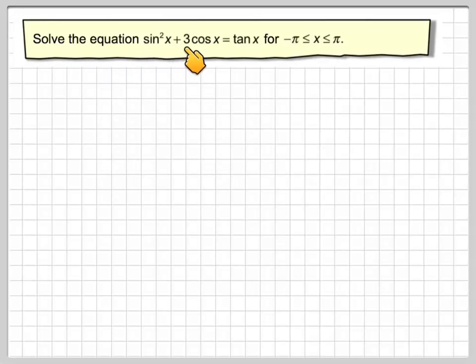Solve the equation sine squared x plus 3 cos x is equal to tan x for x between minus pi and pi.